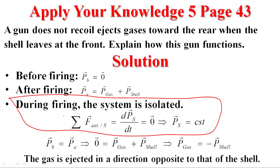We apply the principle of conservation of linear momentum. The system is isolated, so sigma F equals zero and dP/dt equals constant. For recoil of a gun or cannon, P before firing equals P after shooting. The linear momentum of the system before firing is zero since the system is at rest. After firing, the linear momentum of the gas plus shell gives us P_gas equals negative P_shell. The gas is ejected in a direction opposite to that of the shell.